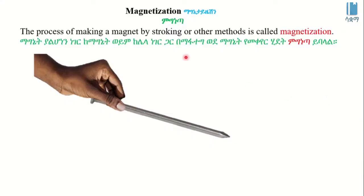This video is about magnetization. The process of making a magnet by stroking or other methods is called magnetization.